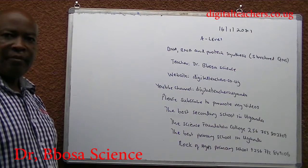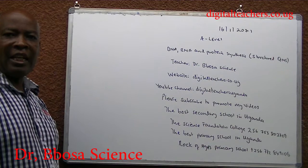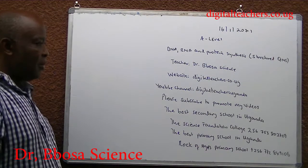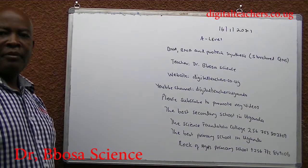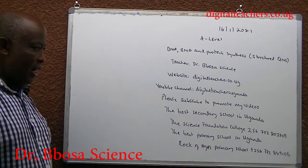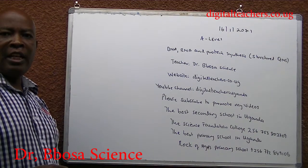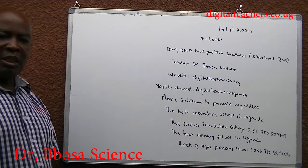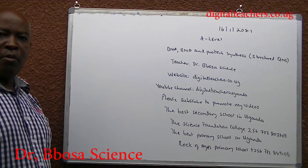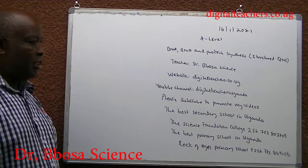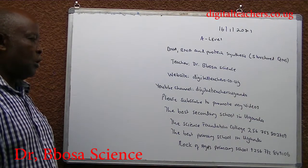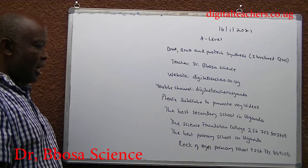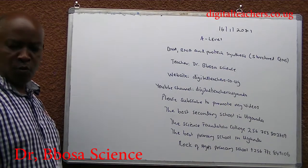Here find notes, exams and their marking guides in physics, chemistry, biology, math and primary subjects. Or on YouTube, type in Dictoteachers Uganda. You will be given categories of related videos in physics, chemistry, biology, math and primary subjects. Please subscribe to promote my videos. Subscription is free. The best secondary school in Uganda is the Science Foundation College. The best primary school in Uganda is Locke of Ages Primary School.